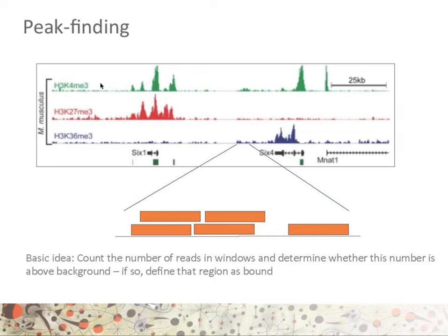Clearly in that example where we look at three different histone modification marks, you can see high peaks which are clearly higher than the noise around them. Here we have three different marks: one being an activating mark that marks usually promoters — H3K4Me3, where K4 methylation 3 marks promoter regions. Whereas another mark such as H3K27Me3, which is a repressive mark, marks the gene body of genes that are not expressed. Finally, H3K36Me3 being a positive mark, marks the gene bodies of genes that are expressed. From that experiment, we can probably assume that gene 6-1 is repressed, whereas another gene is being expressed.